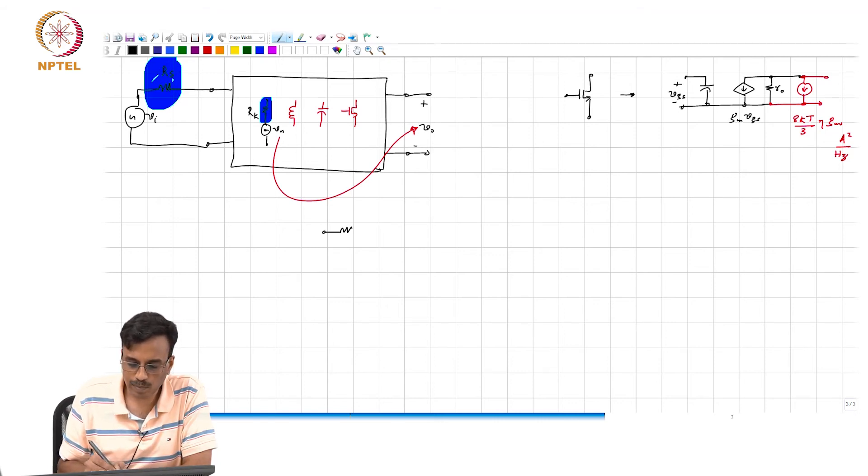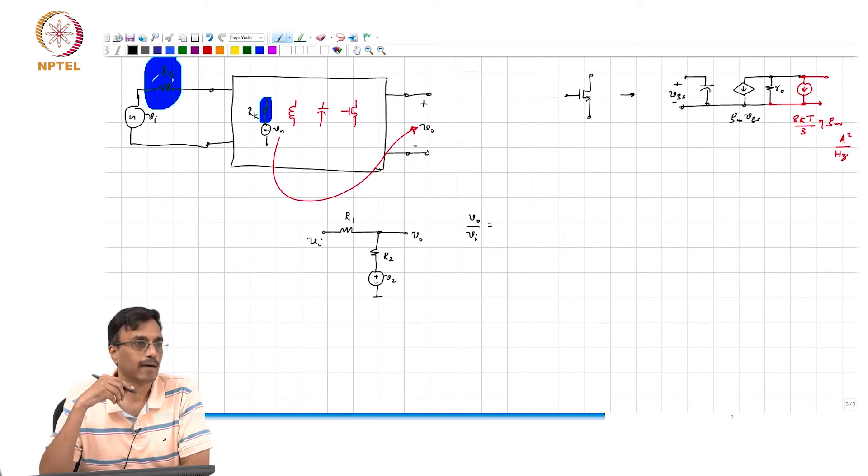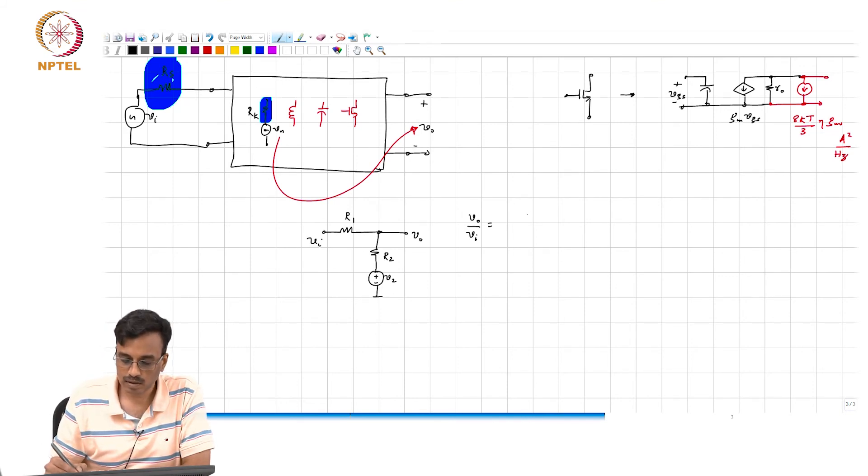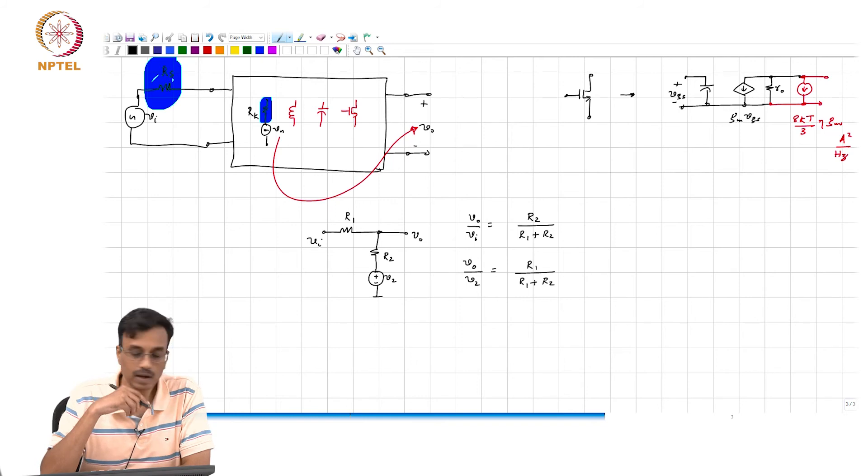Let us try and figure this out. Let me take an example and show you the result, and then we will see why that result makes sense. So let us say this is R1 and R2, and let us call this V2. This is Vi, this is Vo. Vo by Vi therefore is simply R2 by R1 plus R2, and V2 by Vo, by V2 is nothing but R1 by R1 plus R2.